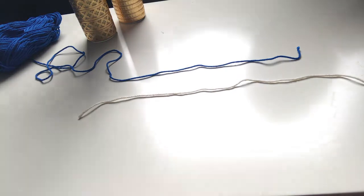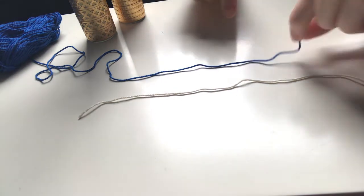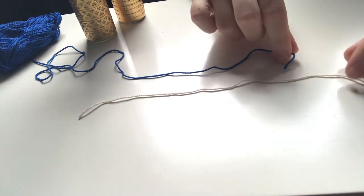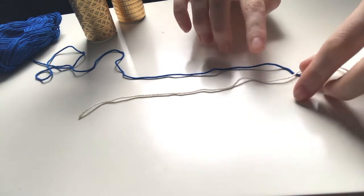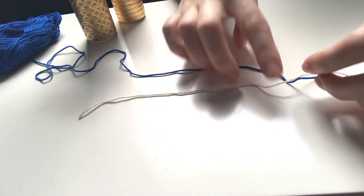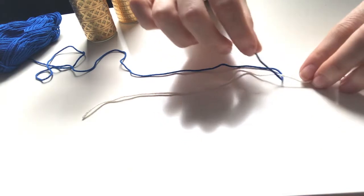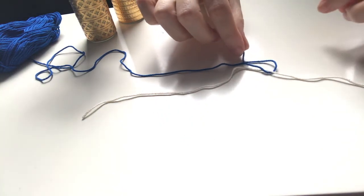We take one end of the yarn and put it underneath the white and then over the top. Then you will see that there is going to be kind of a loop.